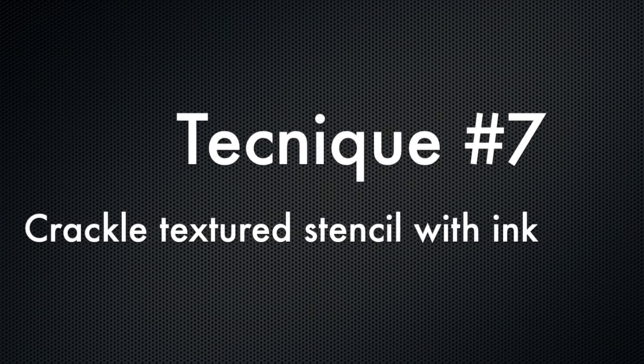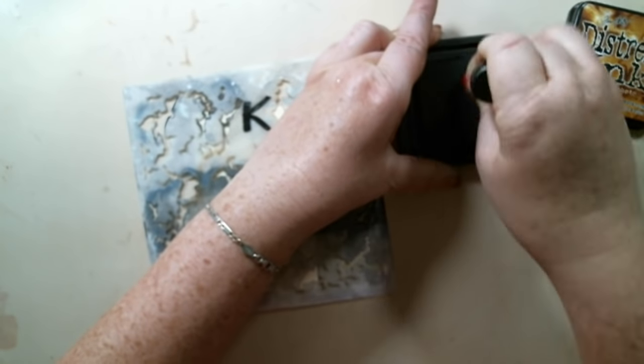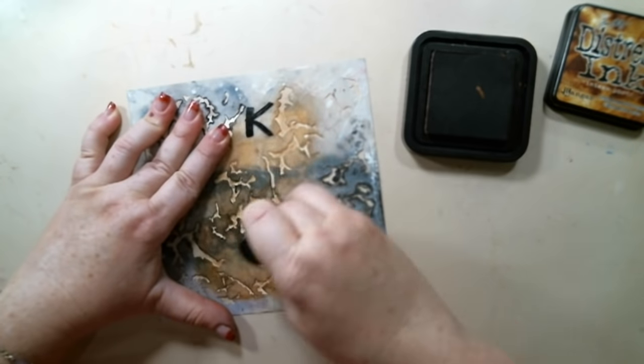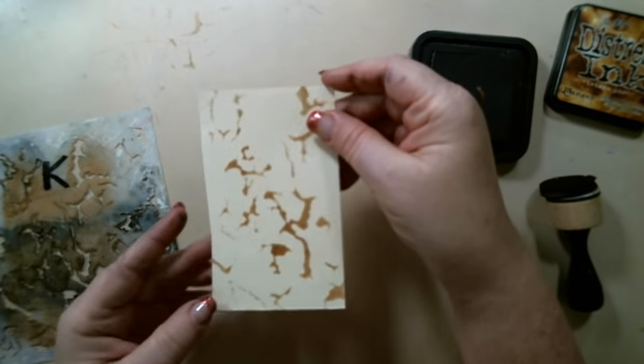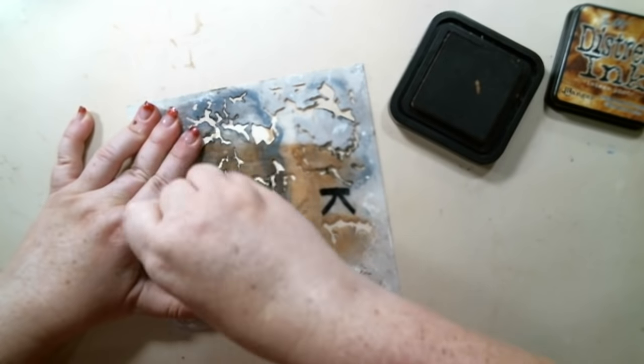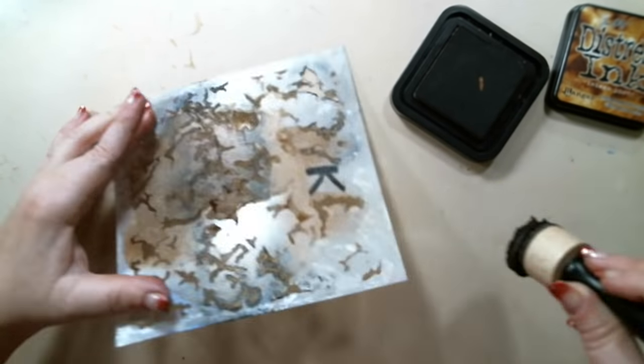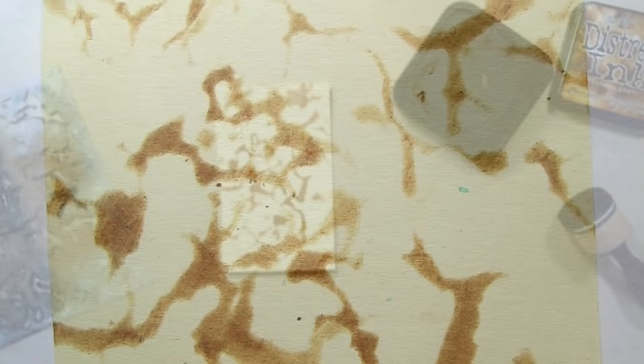Technique number seven also involves the stencil but this time I applied it with ink. I used Tim Holtz vintage photo distress ink, but you can use any type of ink. You just use a dauber and you just rub it on to the stencil and create crackle patterns. This doesn't give such a 3D effect but it's still a really cool effect to create crackle texture.